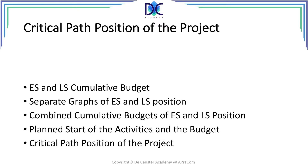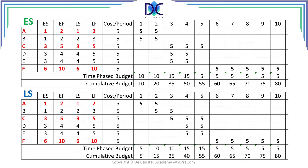At the last part I will identify and define the critical path position of the project. Here you see the early start Gantt chart completed in the previous session. The Gantt chart on the bottom is the late start Gantt chart, and we see that activities B, D, and E have been moved to the late start position. Activities A, C, and F were not moved because they are on the critical path.